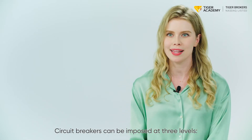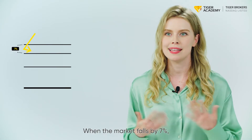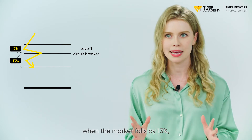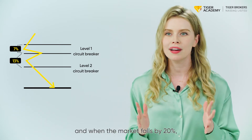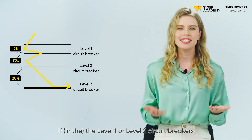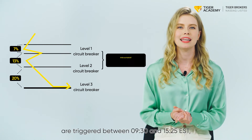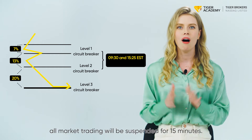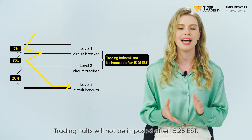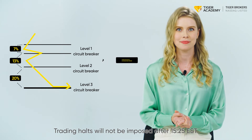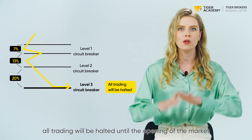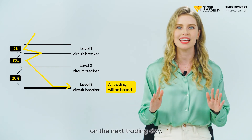Circuit breakers can be imposed at three levels. When the market falls by 7%, the level 1 circuit breaker is triggered. When the market falls by 13%, the level 2 circuit breaker is triggered. When the market falls by 20%, the level 3 circuit breaker is triggered. If level 1 or level 2 circuit breakers are triggered between 9:30 and 15:25 EST, all market trading will be suspended for 15 minutes. Trading halts will not be imposed after 15:25 EST. If the level 3 circuit breaker is triggered at any time during the trading day, all trading will be halted until the opening of the market the next trading day.